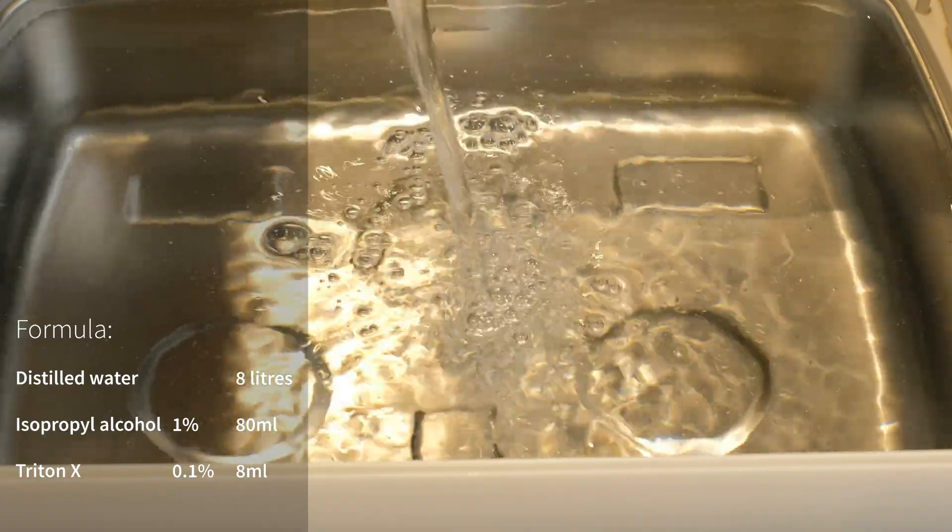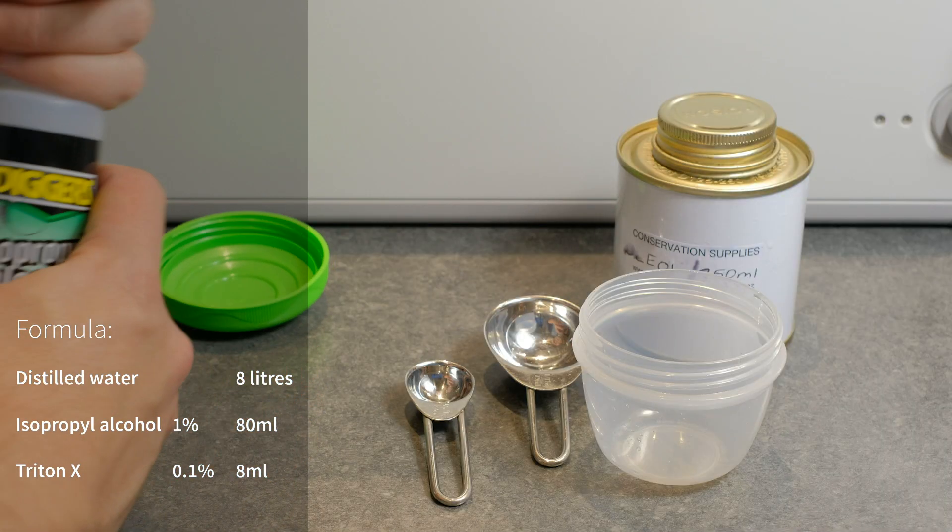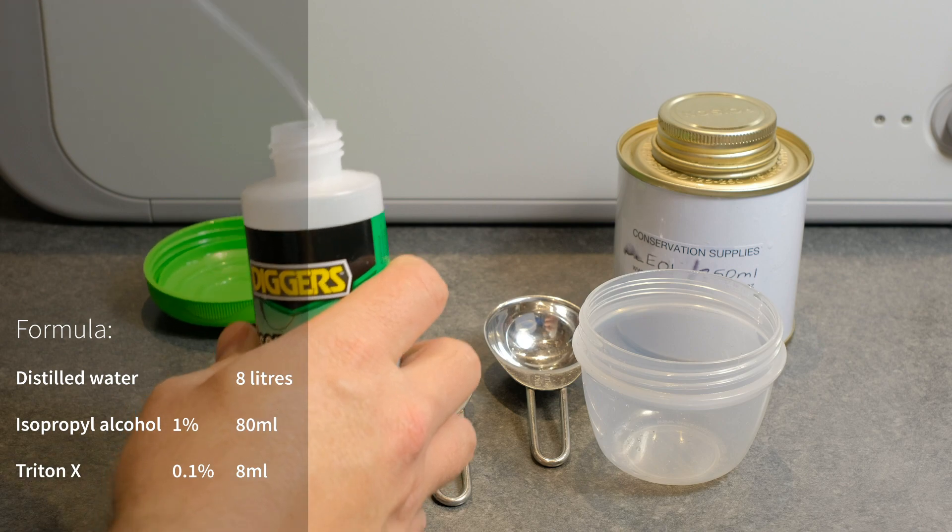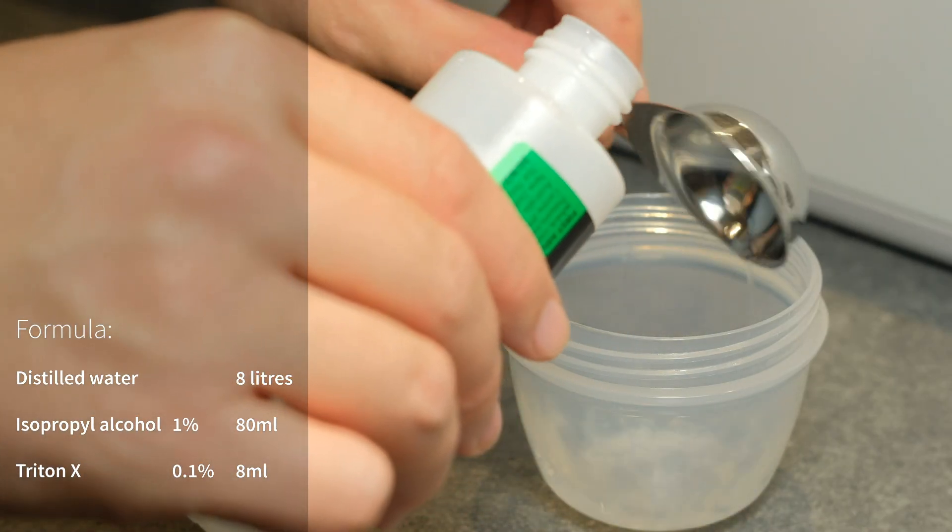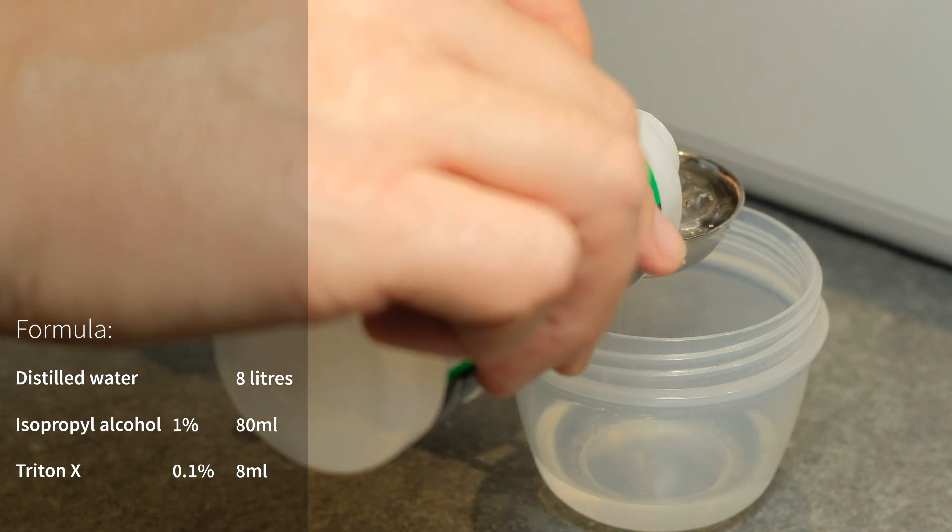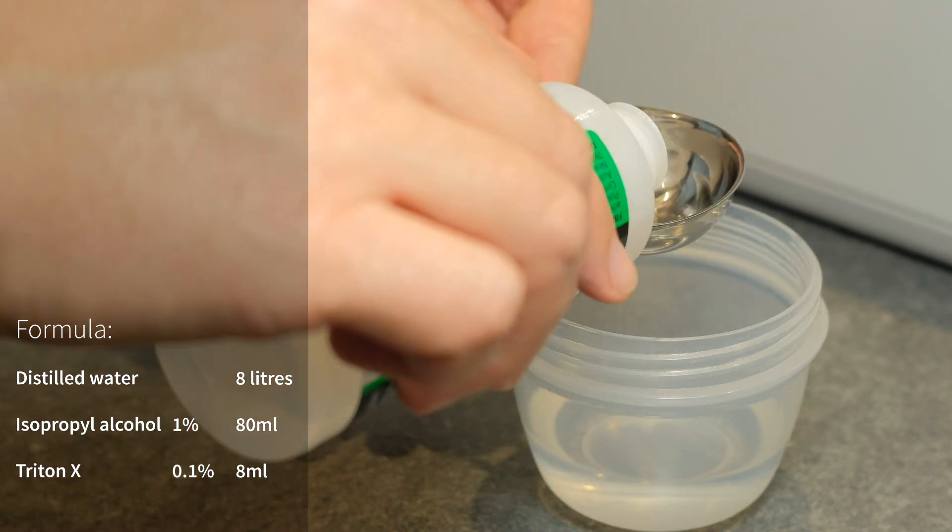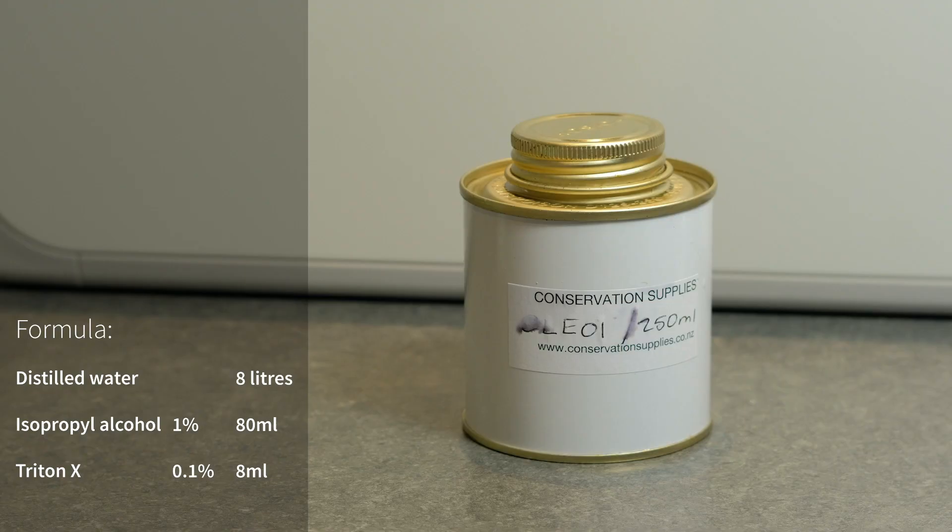This is the formula that I found on the internet. I don't know if it's the best formula but that's the one I'm using at the moment. You use distilled water and then you add some isopropyl alcohol at one percent. So if you were using eight liters of water you would use 80 milliliters of isopropyl alcohol.